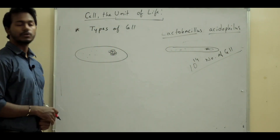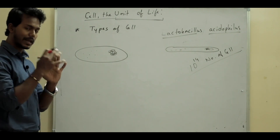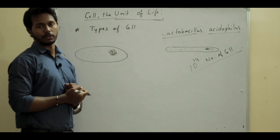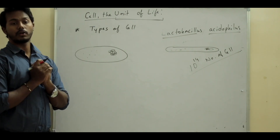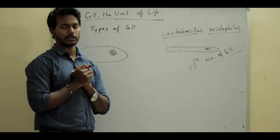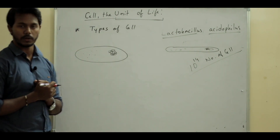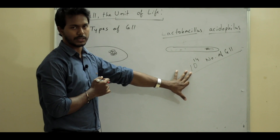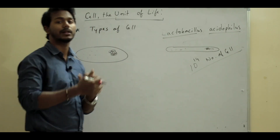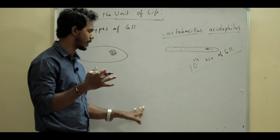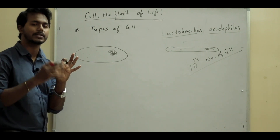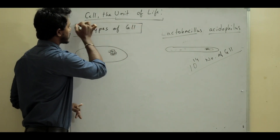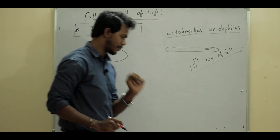The cell is a unit of life. The first thing is that the cell is a structural unit of life. The second thing is that the cell is also a functional unit of life - meaning the organism's body functions, called metabolic activities, such as cellular respiration, hormone formation, and enzyme formation, all happen inside the cell.